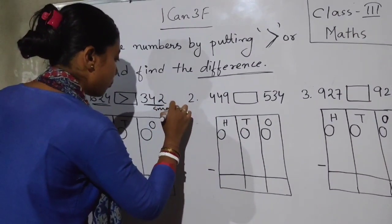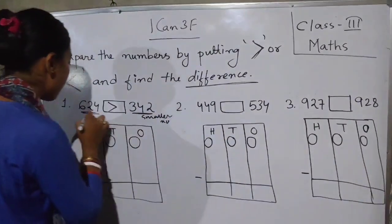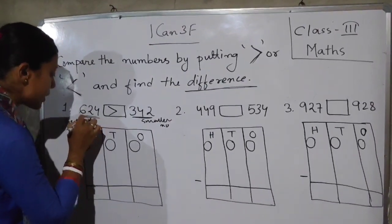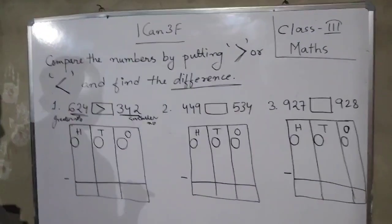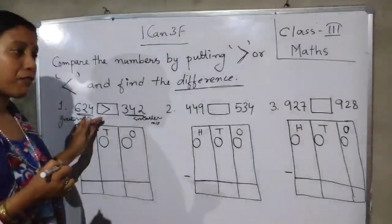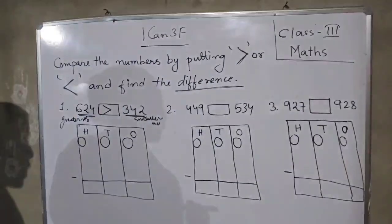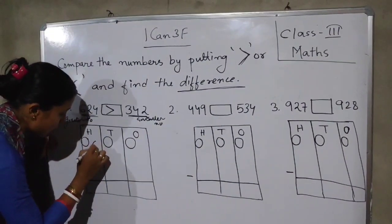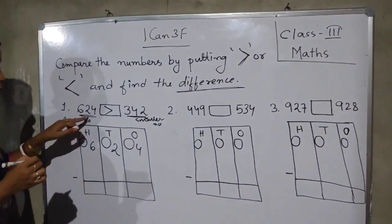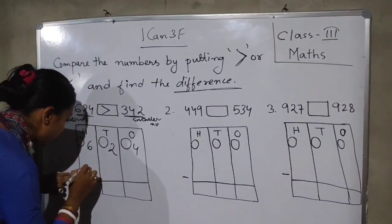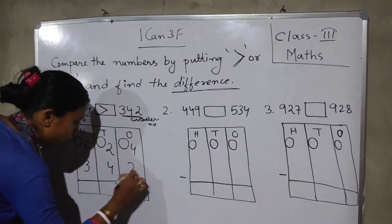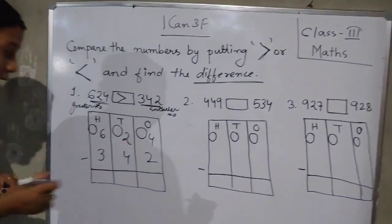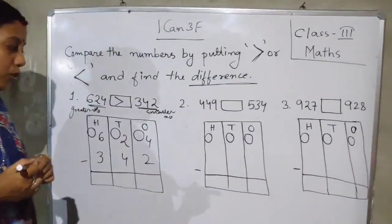This is the smaller number and this is the greater number. Remember, after comparing and after putting the sign, we will subtract the smaller number from the greater number. So we will write: 624 minus 342. We are subtracting the smaller number from the greater number — 342 from 624.